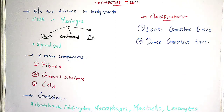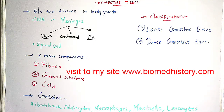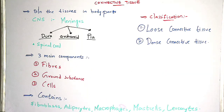Coming to the fifth one — leukocytes. The other name for leukocytes is white blood cells (WBC). Their main function is to help in the protection of our body from infections or infectious species. That is the main function of leukocytes.